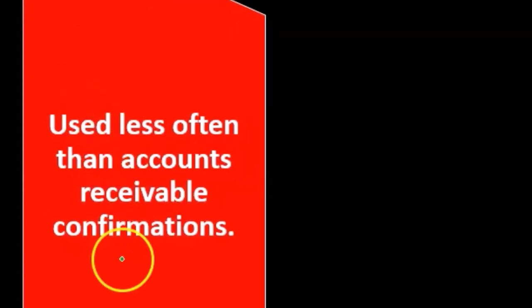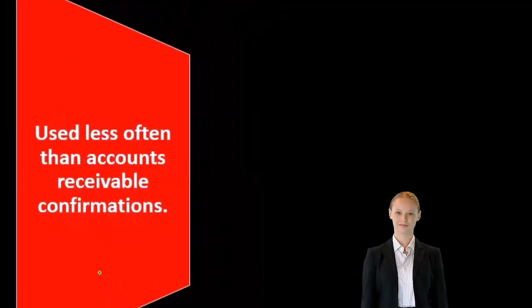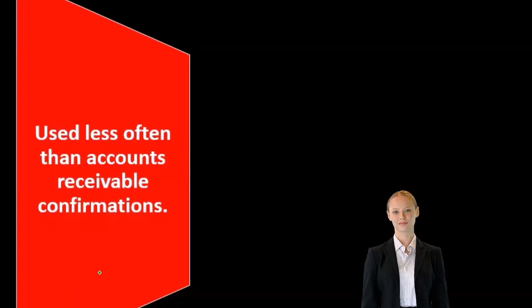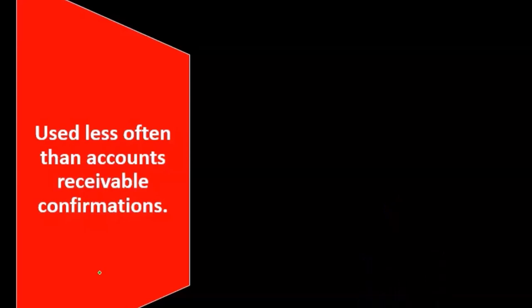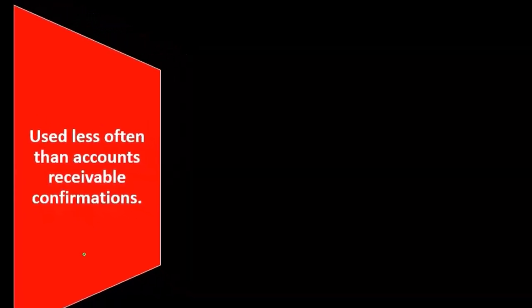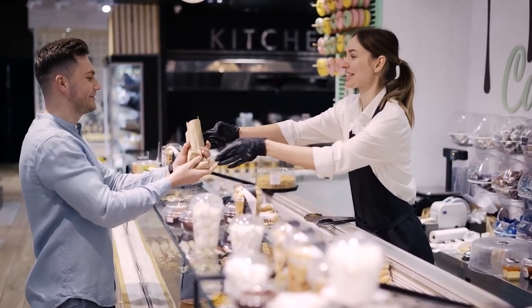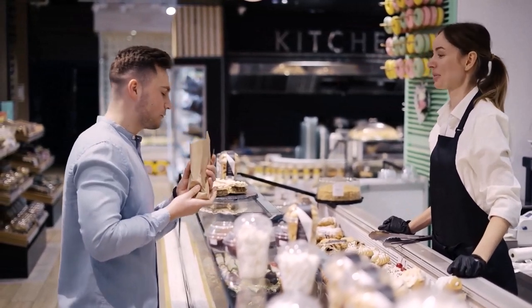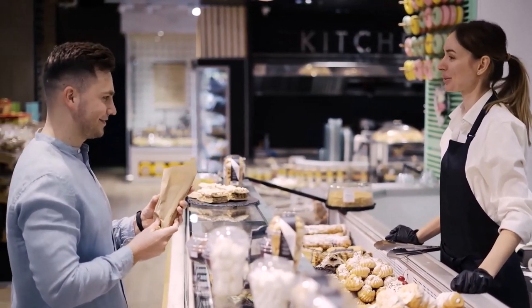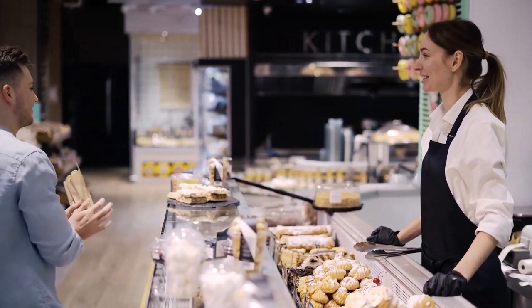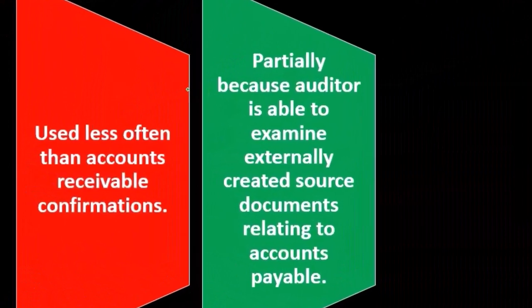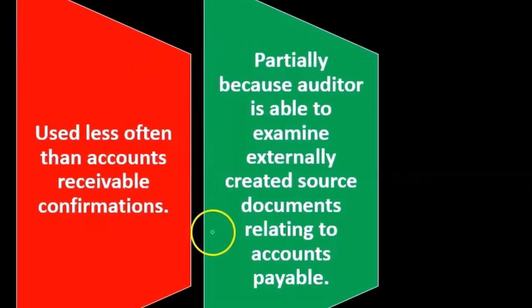Accounts payable — we can do the same thing, but it's usually not as necessary a process. We're almost definitely going to do confirmations for cash, probably for accounts receivable, and accounts payable to some degree depending on the entity. For accounts payable, there's a lesser likelihood we'll send confirmations out to vendors, meaning the company we are auditing owes money to those vendors. They are used less often than accounts receivable confirmations, partially because the auditor is able to examine externally created source documents related to accounts payable.